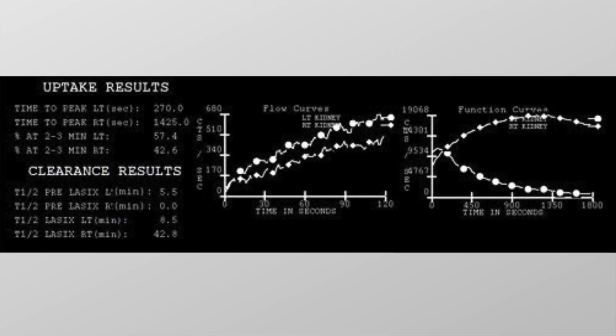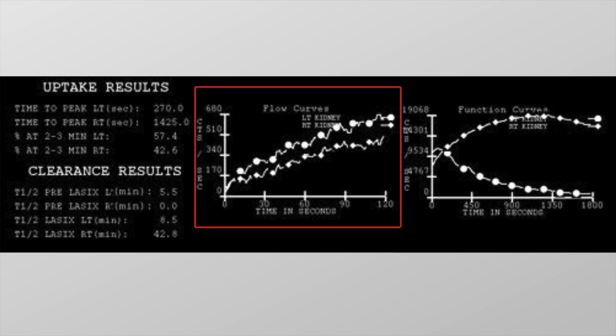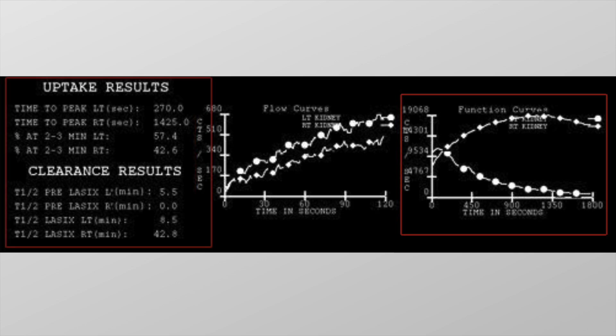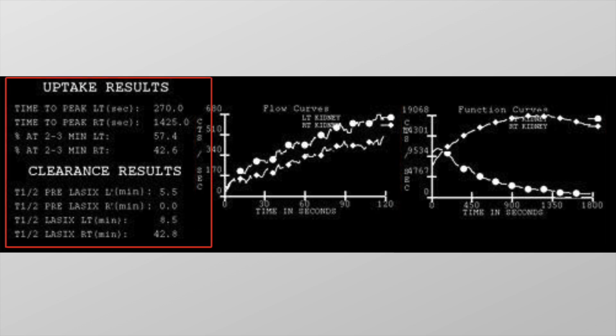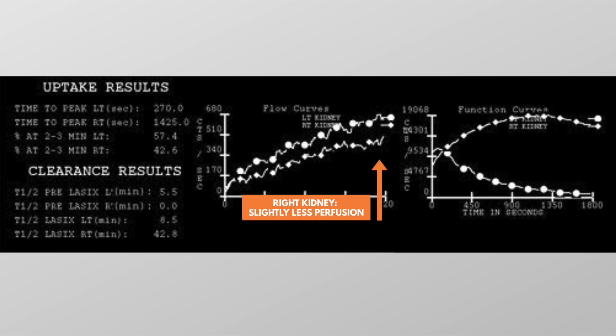Lastly, we have the analysis panel. These computer-generated curves give a graphical representation of the scan images over time. The common elements you will find on any study are curves representing early uptake and excretion, and two tables for differential function and clearance. Each kidney is plotted separately, and usually the curves show rapid uptake and rapid excretion. In this case, the right kidney shows slightly less perfusion and significantly slower excretion than the left kidney.